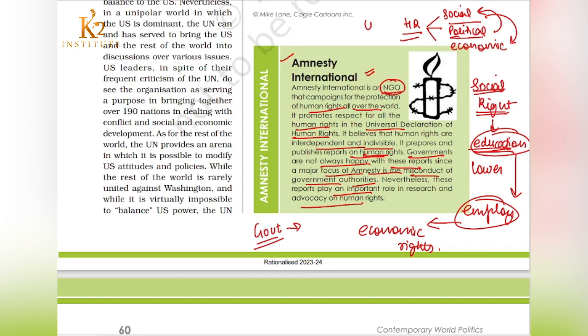These reports give us an actual understanding of the status of human rights, so we can take certain steps — for example, identifying that in a particular country human rights are violated on specific grounds and determining what steps need to be taken. That is all about Amnesty International. I hope the video was clear to you. Thank you so much for watching.